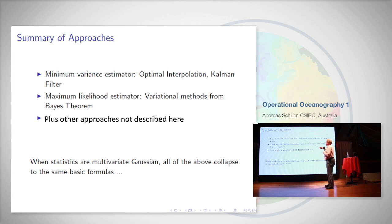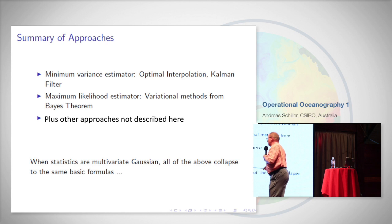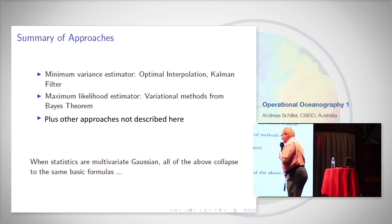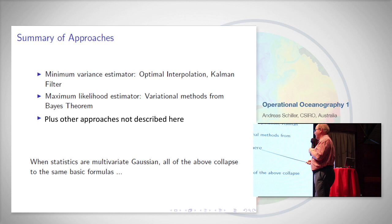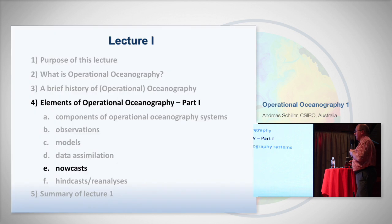To summarize data assimilation: there is minimum variance estimator theory which applies to optimal interpolation and the Kalman filter; there is maximum likelihood estimator which applies to variational methods based on Bayes' theorem; and other approaches which are largely variants of the above. When the statistics are multivariate Gaussian, many of these approaches collapse to the same basic formula and should theoretically give very similar or identical results.